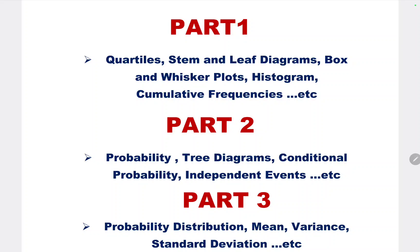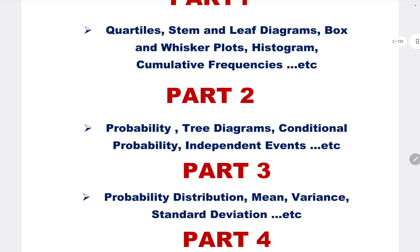First, part one is based on quartiles, stem and leaf diagram, box and whisker plots, histogram, cumulative frequencies and some other questions related to chapters one, two, three, four.